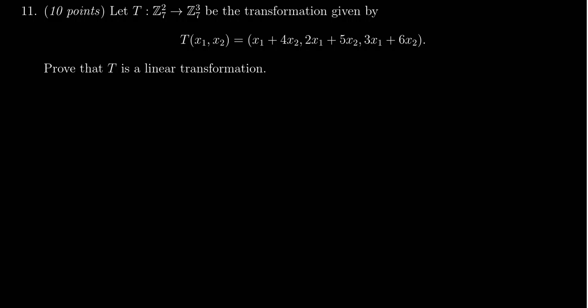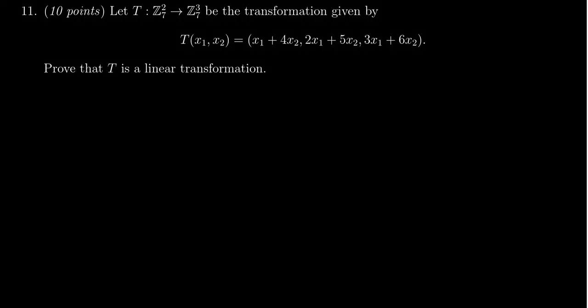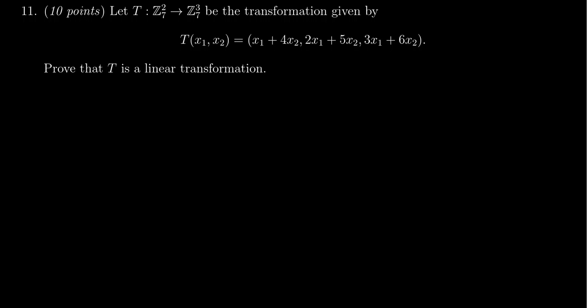In this video, we're going to present the solution to question 11 from the practice midterm exam number 1 for Math 2270. We are given a transformation which goes from Z7² to Z7³, given by the rule T of X1, X2 equals X1 plus 4X2, 2X1 plus 5X2, and 3X1 plus 6X2. Our function is working mod 7, going from mod 7 with two entries to mod 7 with three entries, but the fact that we're working mod 7 really isn't going to have much bearing on this calculation whatsoever.